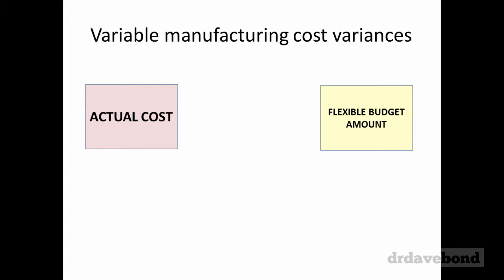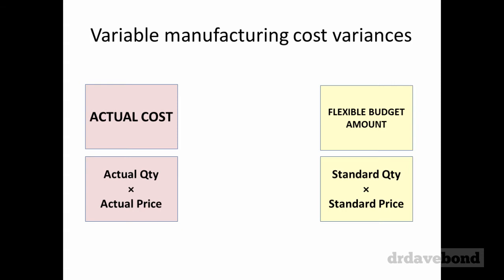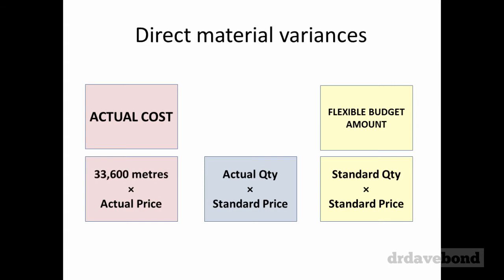Following the textbook setup, it flips the actual side and the flexible side. The actual cost is actual quantity times actual price. The flexible budget amount is the standard quantity — the standard quantity to go into each unit of output times the actual output — so this is the 20 meters of material, for example — multiplied by the standard price, which is what you expected to pay. The comparison between these two is the overall variance.